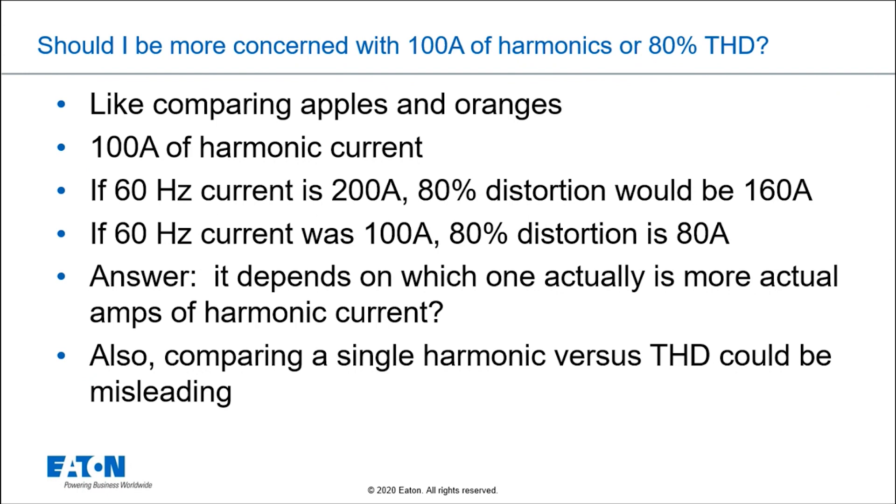Actual amps of harmonic current, because that current is what's doing damage to your system in terms of heating, and it's also what's causing the voltage to be distorted. So when you have voltage distortion, it really doesn't care about percent THD on current. It's really more important about the actual amps.